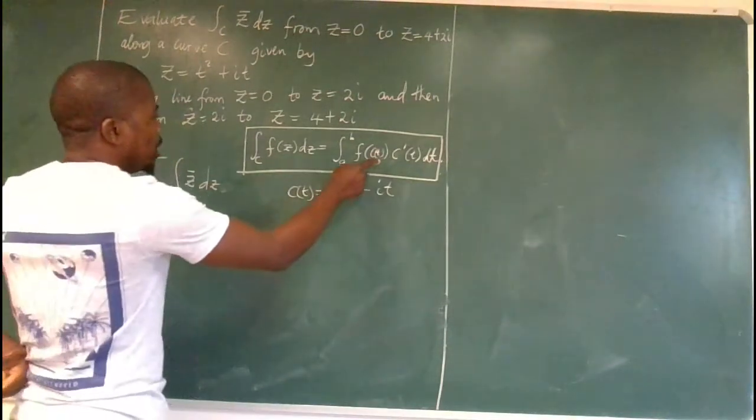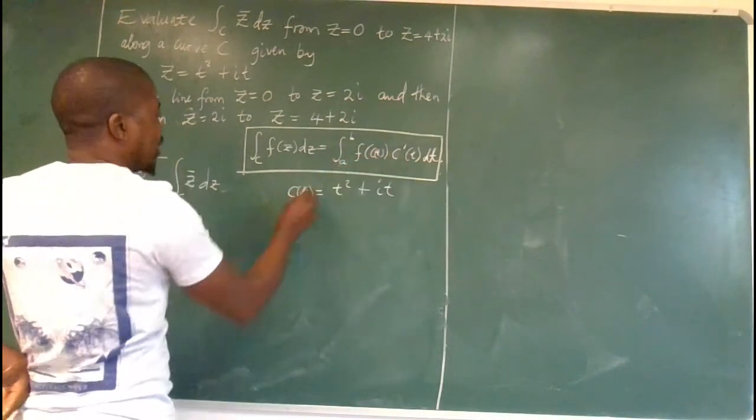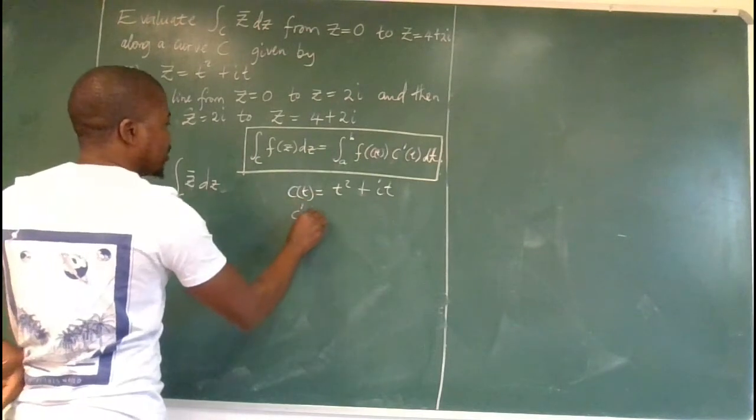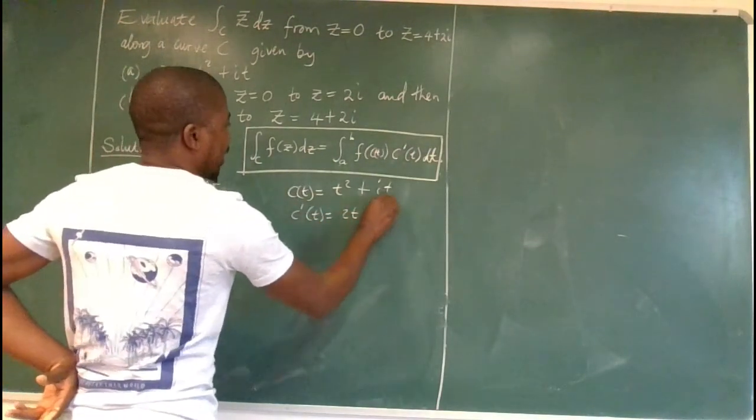Now, we need to find the derivative. So c prime t is none other than 2t plus i.